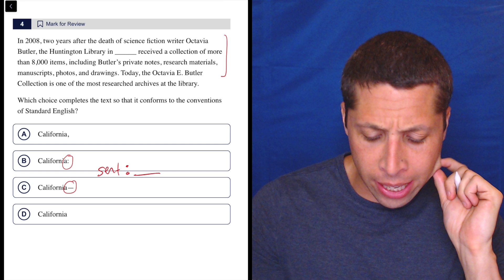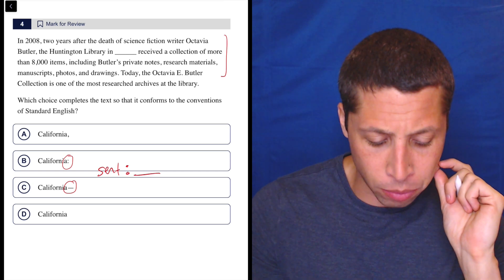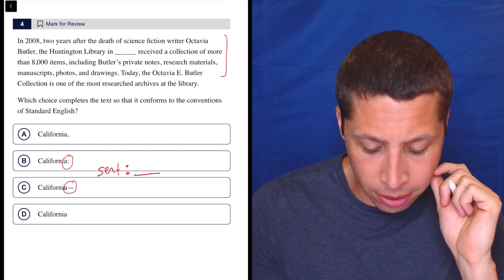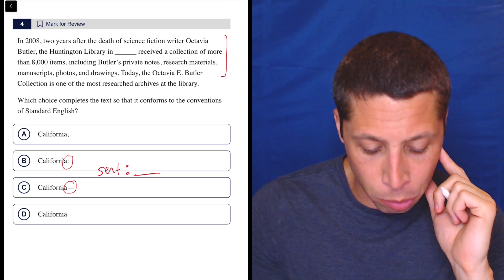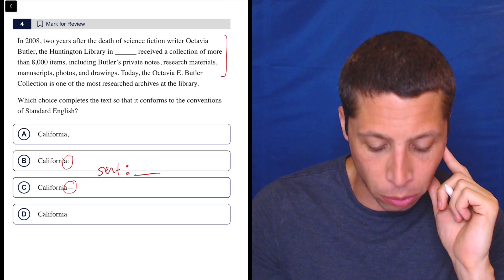It's a long sentence. In 2008, two years after the death of science fiction writer Octavia Butler, the Huntington Library in California received a collection of more than 8,000 items, including Butler's private notes, research materials, manuscripts, photos, and drawings.